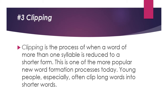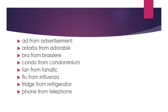Clipping is the process of when a word of more than one syllable is reduced to a shorter form. This is one of the more popular new word formation processes today — young people especially often clip long words into shorter words. Examples of clipping: ad from advertisement, adorbs from adorable, bra from brassiere, condo from condominium, fan from fanatic, flu from influenza, fridge from refrigerator, and phone from telephone. In order to clip a word, it has to have two or more syllables.